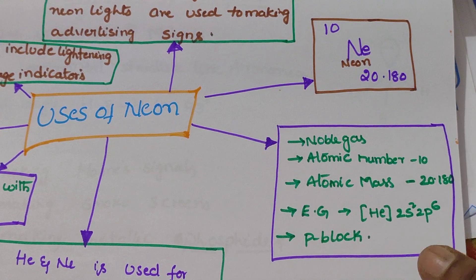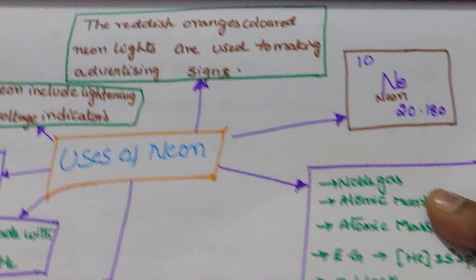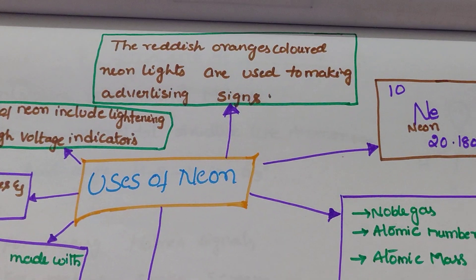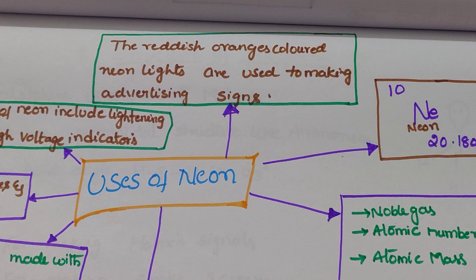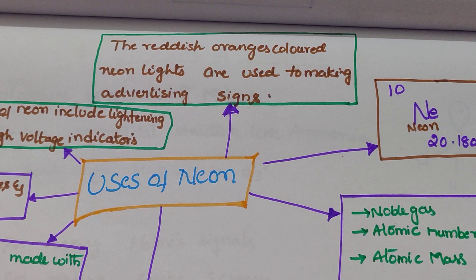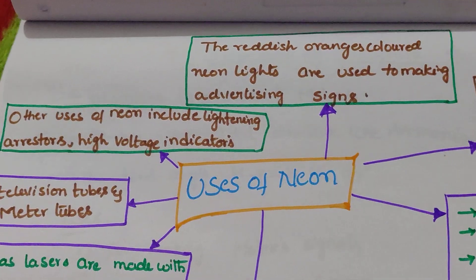And next, the uses of neon. Neon is reddish orange in color. Neon lights are used to make advertising signs — fluorescent lights that emit a reddish orange color.